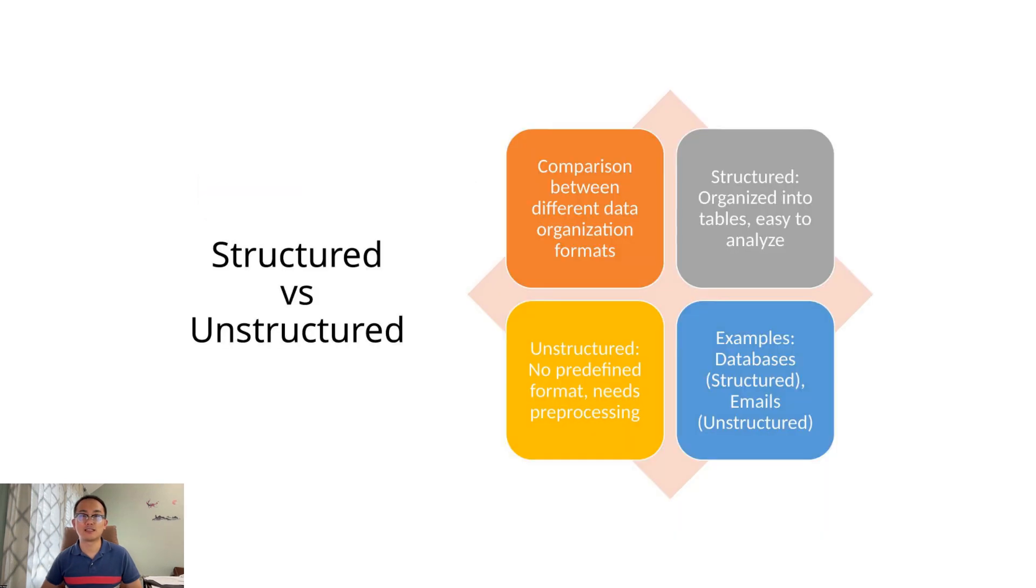Before we analyze anything, we need to understand what kind of data we're dealing with. One major distinction is between structured and unstructured data. Structured data fits neatly into rows and columns, like a spreadsheet or database. It includes things like numbers, dates, or labels that follow a consistent format. This kind of data is usually easier to search, filter, and analyze.